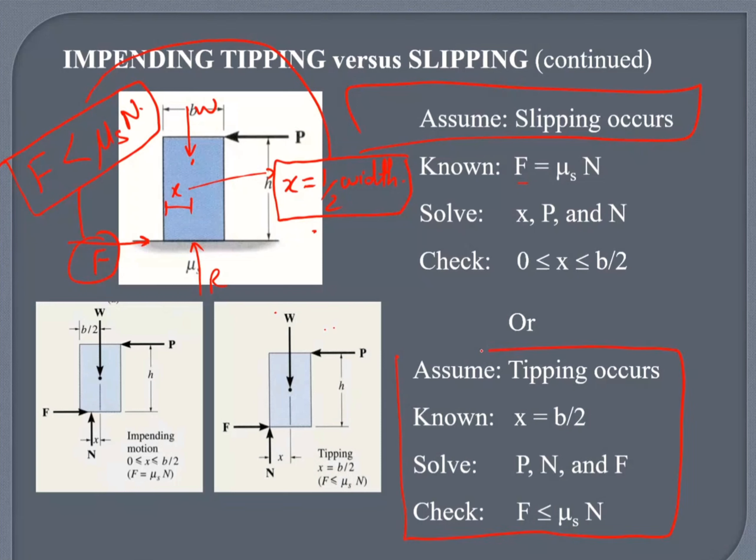That's what exactly what it says here for tipping. And that was exactly what I mentioned for this for slipping. You use this, you check this for tipping. Is that clear to everyone?